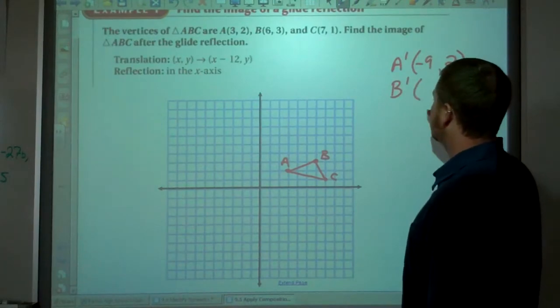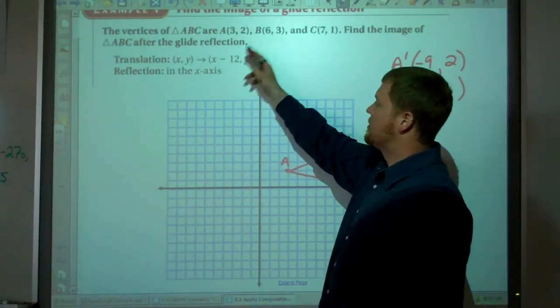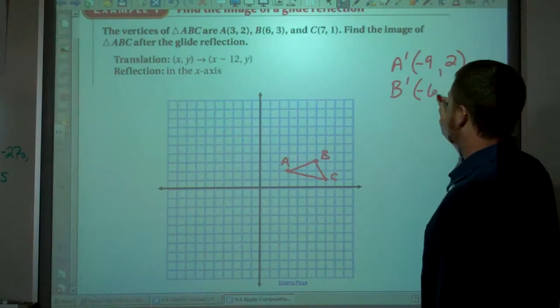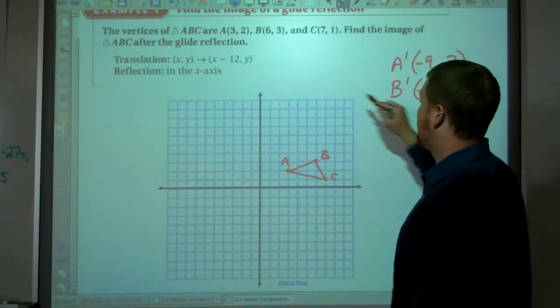Alright, B prime. X minus 12. So 6 minus 12 is negative 6. And then y stays the same, so 3.